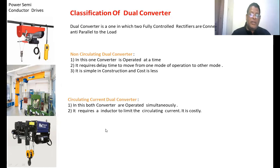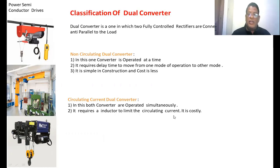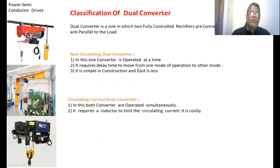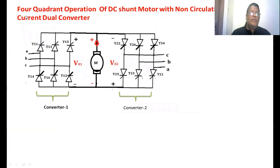The second type is the circulating current dual converter, where both converters operate simultaneously. It requires an inductor to limit the circulating current, making it a more complex and costly circuit. We will first examine the non-circulating dual converter, and then the circulating current dual converter.